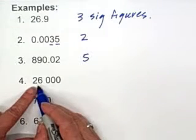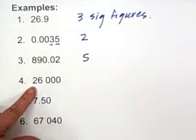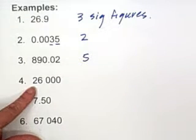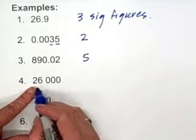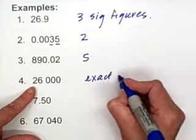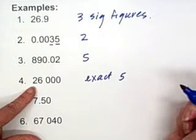In this number here, 26,000, it depends, again, on whether the number is exact or approximate. If we're told that this number is exact, we count every single digit. So if it's exact, we would have five significant figures.